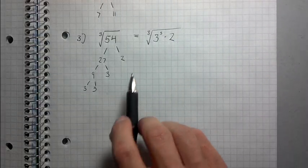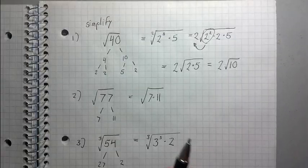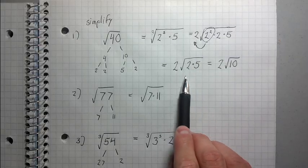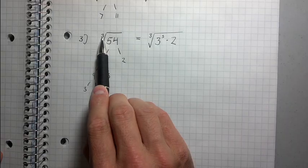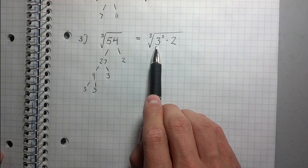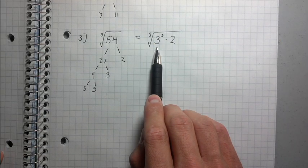Alright, now notice, and now, whereas before I was pulling out pairs of factors because it was a square root, now since it's a cube root, meaning there's a 3 here, I'm going to be actually pulling out triplets of factors.